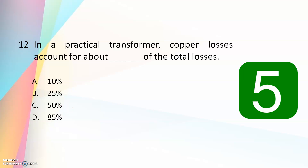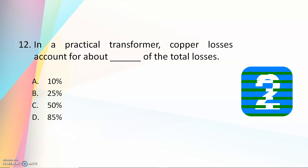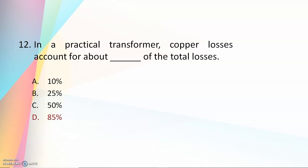Twelfth question: in a practical transformer, copper losses account for about what percentage of total losses — 10%, 25%, 50%, or 85%? The answer is 85%. In a transformer, the maximum losses are due to copper losses.